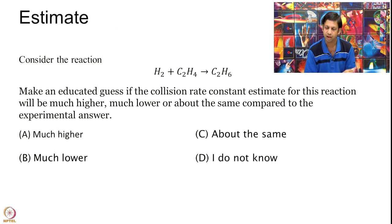Let us start with one question. Consider this reaction of hydrogenation of C2H4 to give C2H6. I'm adding hydrogen over the double bond to give this molecule. Can you estimate - you don't have to calculate - just using your intuition of the assumptions we have made, will the rate constant as estimated by collision theory be much more, much less, or more or less the same as the experimental answer? Please pause the video, take a moment, reflect on the question and choose your answer.